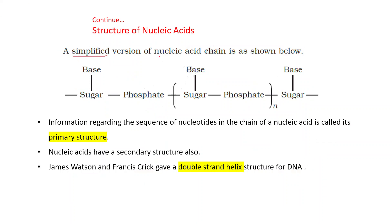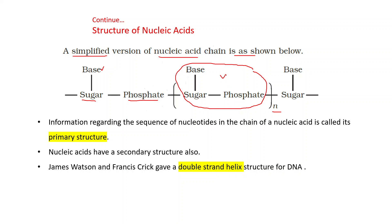A simplified version of a nucleic acid chain: the sugar is linked with the base, and the sugar is also linked with the phosphate. This unit is repeated n times. This represents the nucleotide, and when repeated n times you get the polynucleotide, that is the nucleic acid. Information regarding the sequence of nucleotides in the chain of a nucleic acid is called its primary structure.